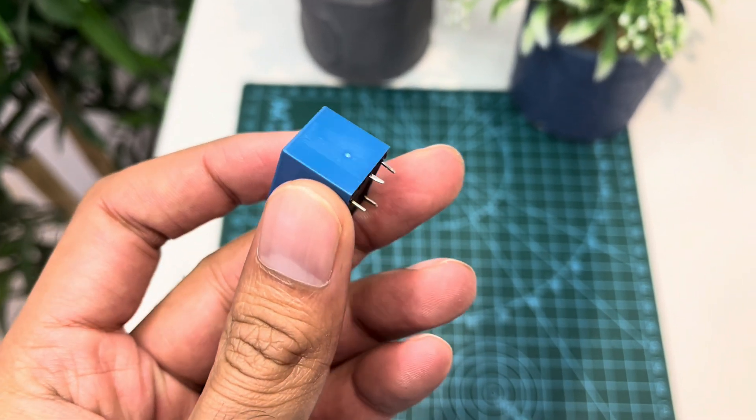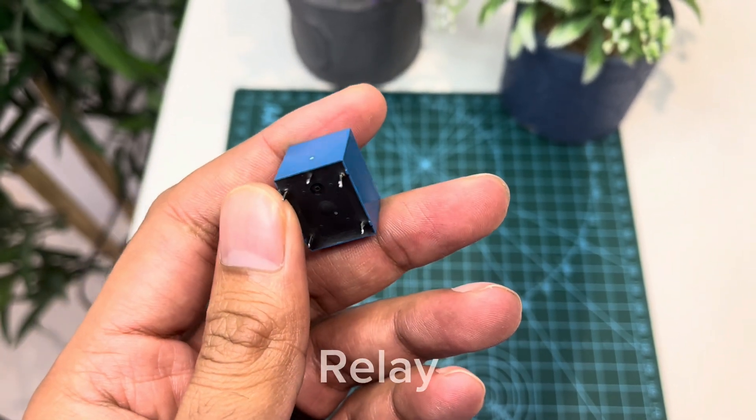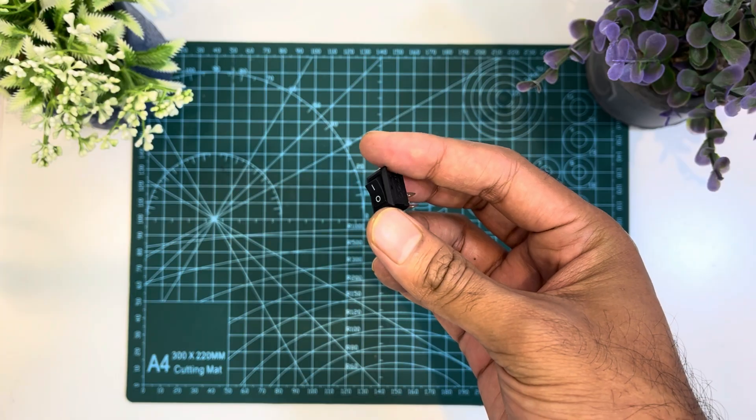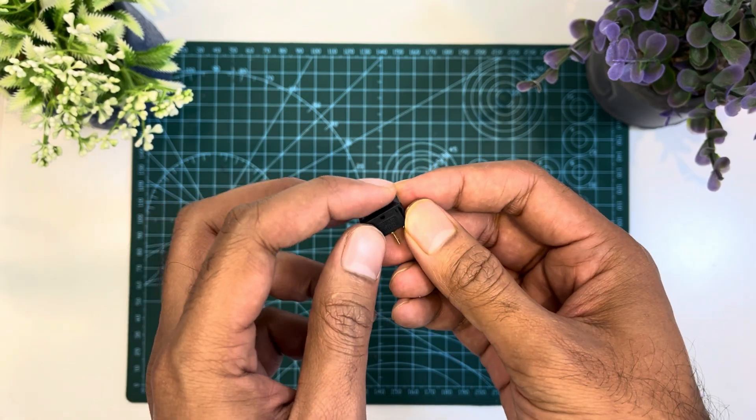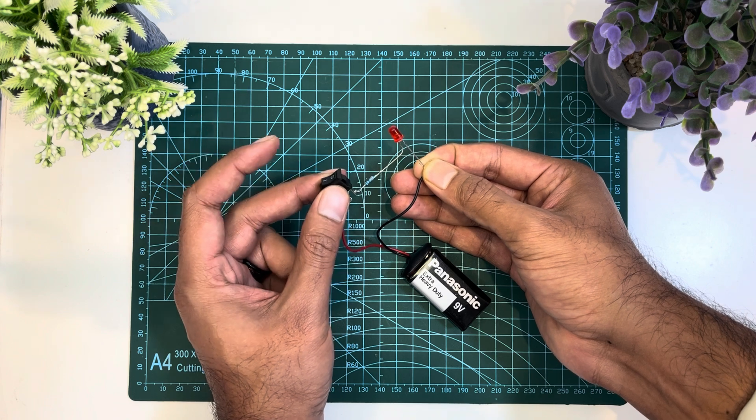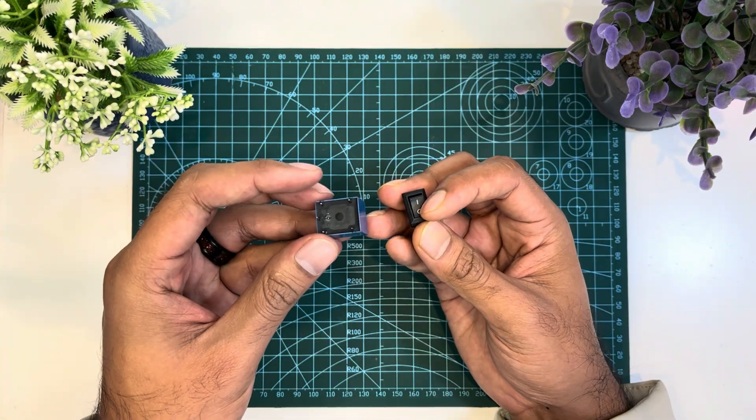This is a simple electromechanical switch called a relay. We use normal switches to close or open a circuit manually. A relay is also a switch that connects or disconnects two circuits.